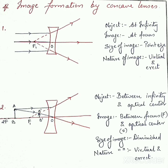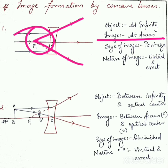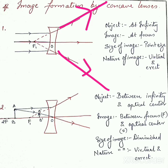From this ray diagram we'll obtain information about the image. For lenses, wherever two or more refracted rays meet, the head of the image is formed at that place. The refracted rays are meeting at focus, so the image will be formed at focus. In the forward direction, these refracted rays are never going to meet, as a concave lens is a diverging lens — the incident rays diverge.